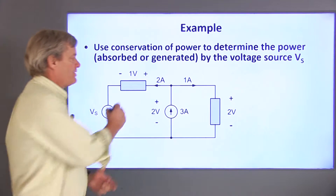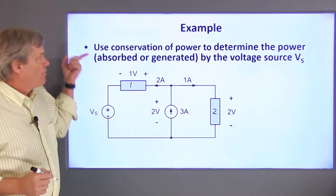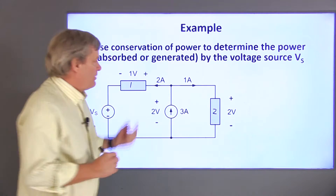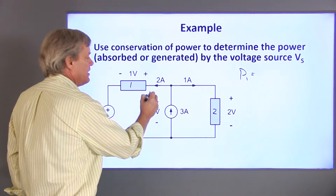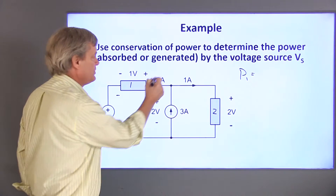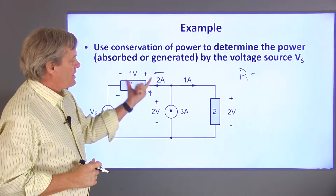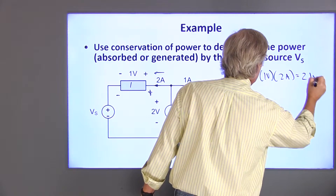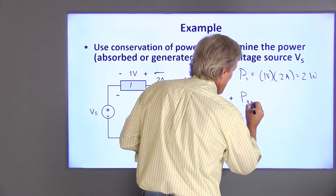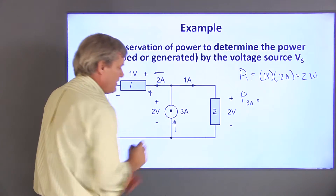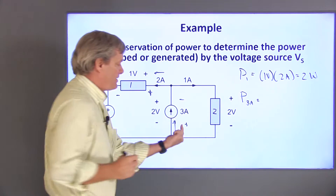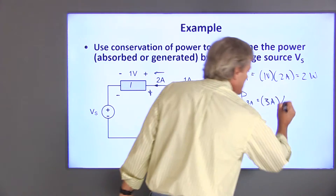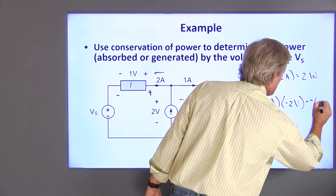In this circuit, we know the voltages and currents for elements 1, 2, and this 3-amp source. We want to use conservation of power to find the power absorbed or generated by this voltage source, V sub S. For element 1, I'll use plus-minus as the sign convention for voltage, which means positive current is in this direction. Both sign conventions agree with the actual direction, so I don't need to change any signs — this is 1 volt times 2 amps, which is positive 2 watts. For the 3-amp source, I'll use a sign convention in the same direction as the current, so 3 amps doesn't need to change its sign. This sign convention is the opposite of the actual 2-volt difference, so I do need to change the sign on the 2-volt difference, making this minus 6 watts.